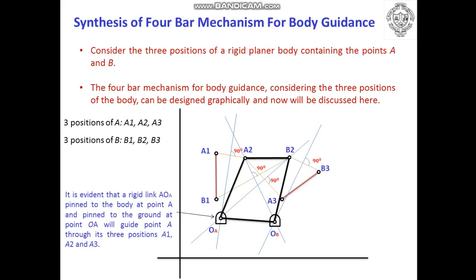The conclusion is that if the three different positions of the coupler are known, you can easily find out the dimensions of the remaining three links — input crank, output crank and fixed link. This is a simple and comprehensive approach to solve the motion generation problem.